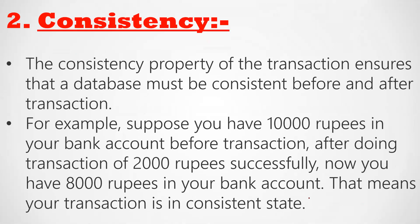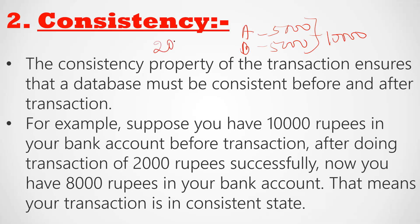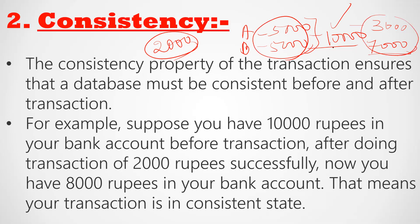The second property in detail is Consistency. The consistency property of a transaction ensures that the database must be consistent before and after the transaction. Suppose A and B are two people — A has $5,000 and B has $5,000, for a total of $10,000. After A transfers $2,000 to B, A has $3,000 and B has $7,000 — and the transaction is in a consistent state.